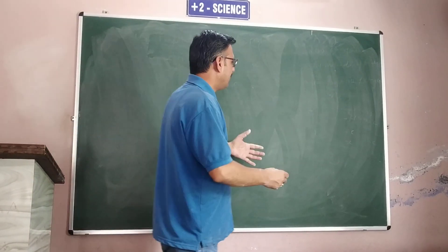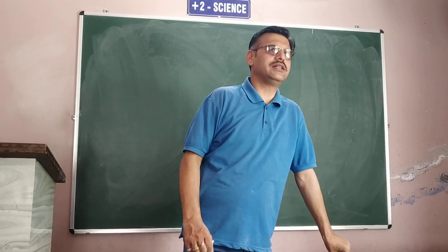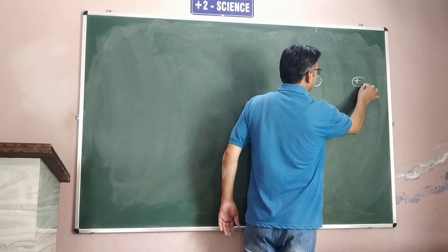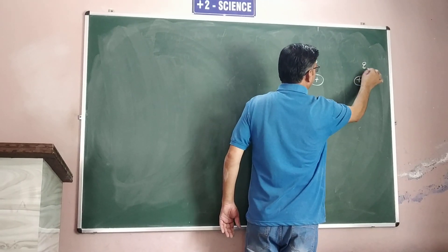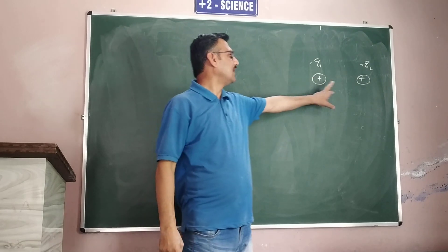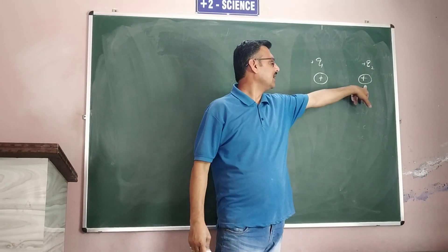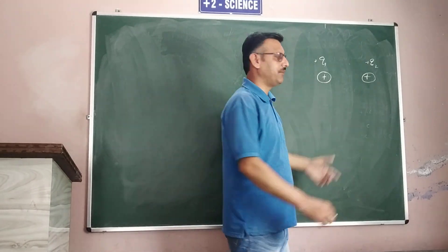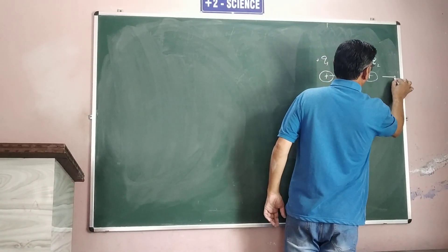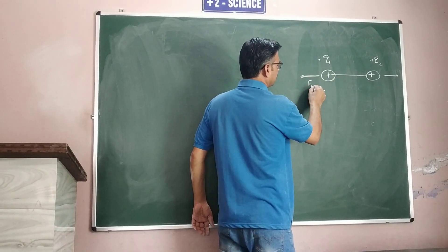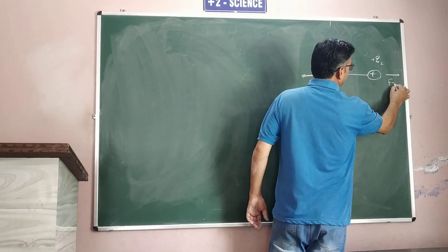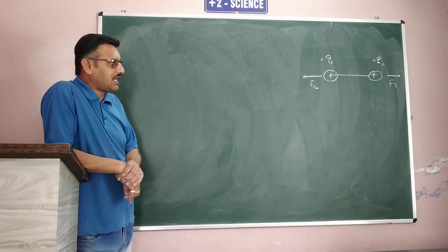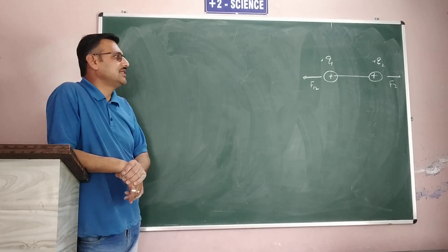Charges have the interactive property. If there are two charges Q and Q, this charge will exert force on the other charge. Because these two charges are the same, the force will be repulsive. These two charges exert force on each other. Because the nature of the charge is the same, therefore the force is a repulsive force.